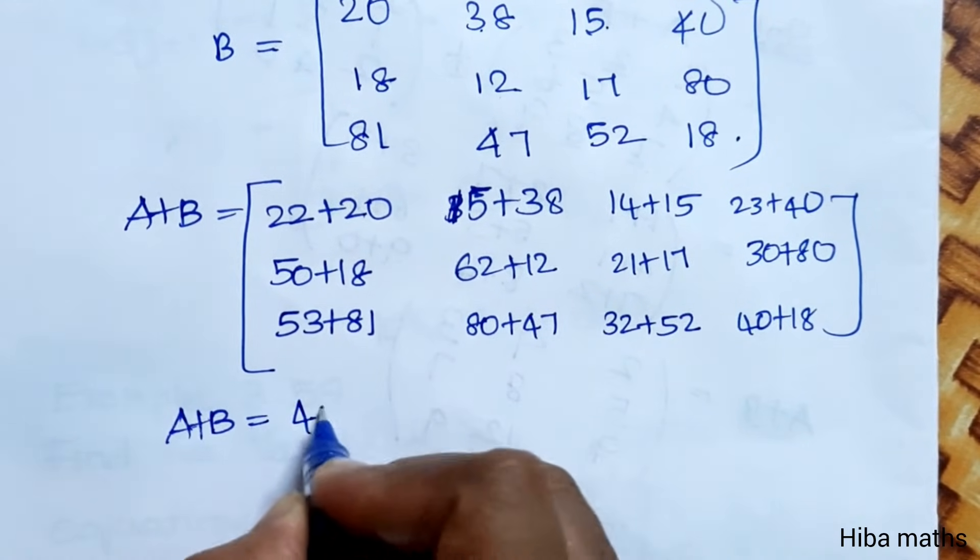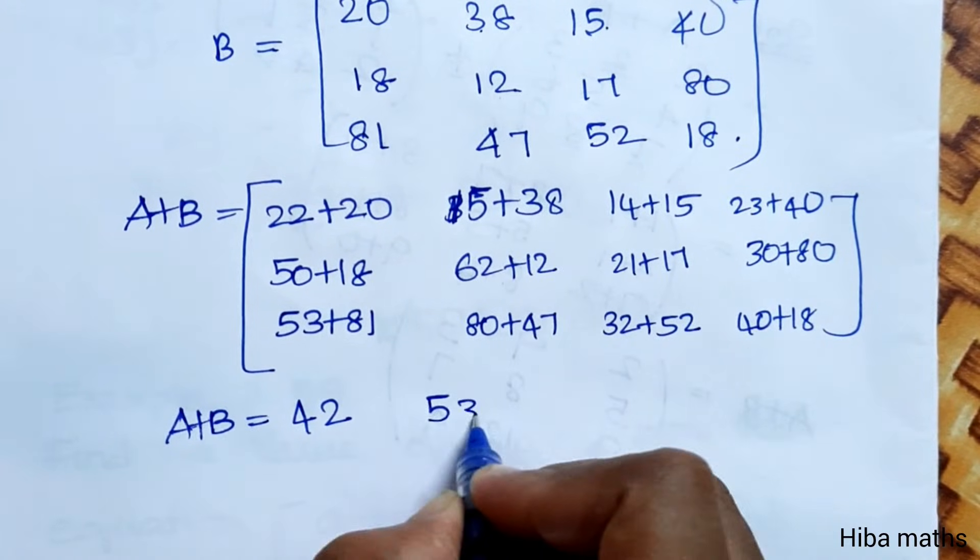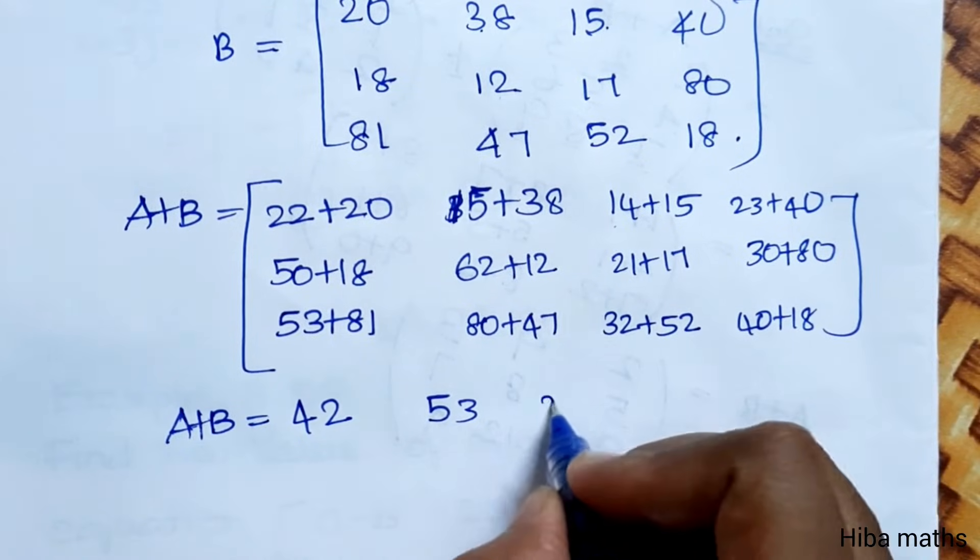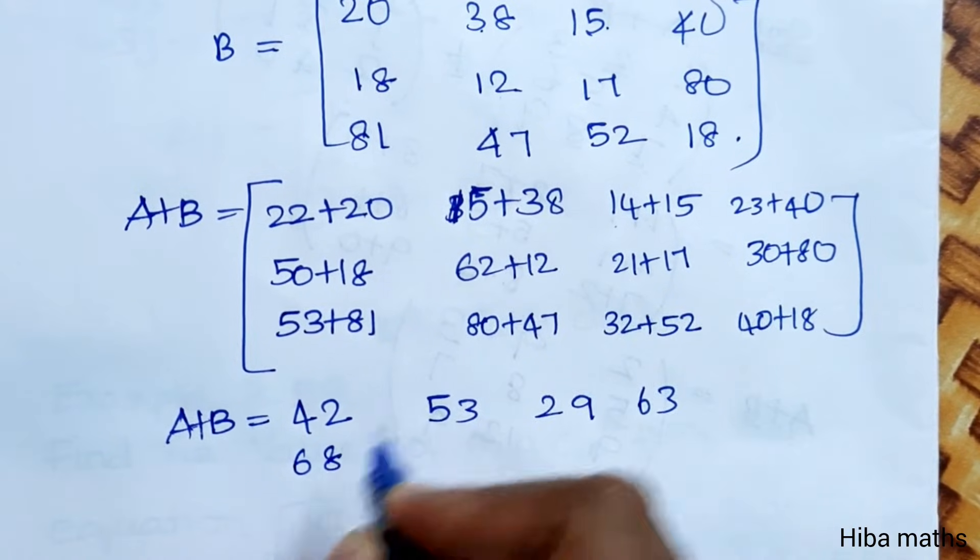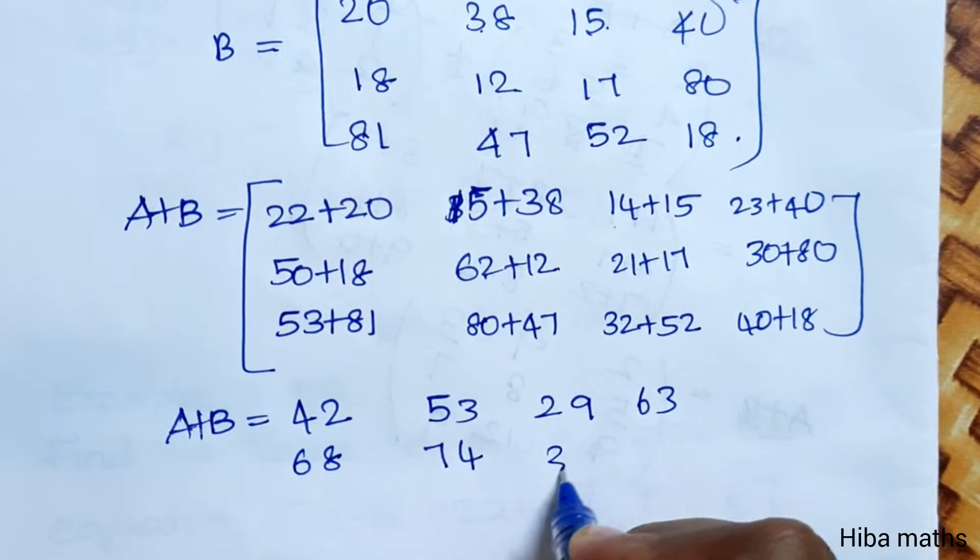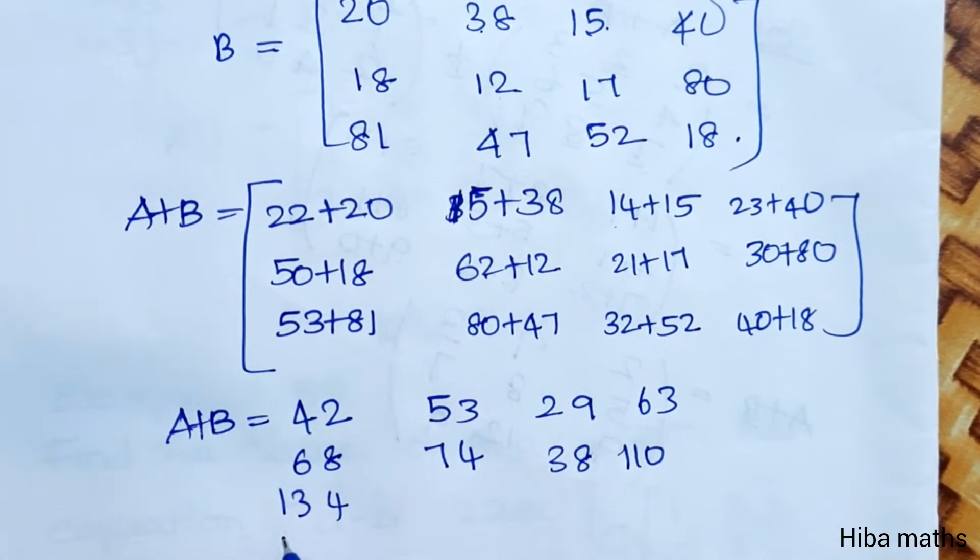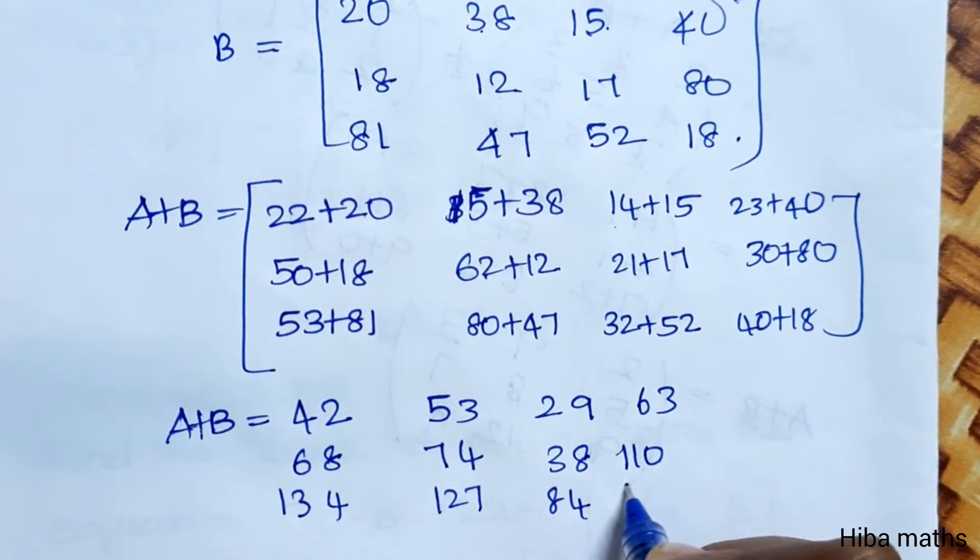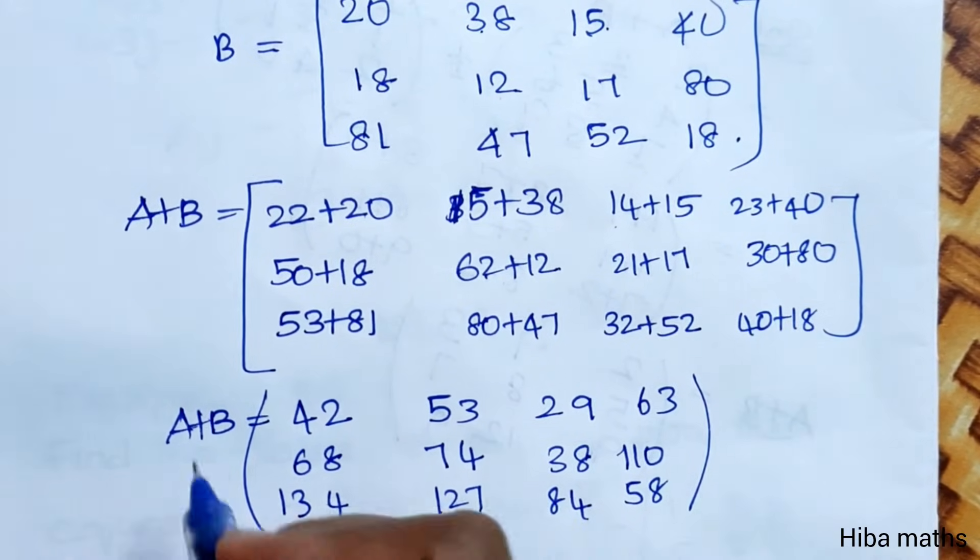So A plus B is equal to 22 plus 20 is 42, 15 plus 38 is 53, 50 plus 18 is 68, 62 plus 12 is 74, 38, 110, 134, 127, 84, 58.